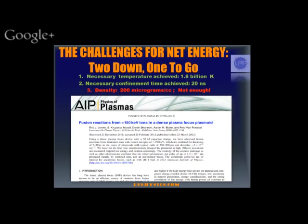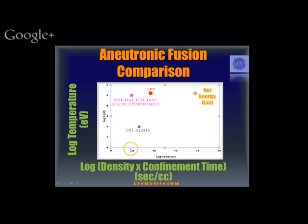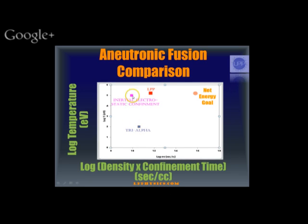Our density is about 8×10^19 per cc right now. Comparing with others working on a-neutronic fusion: on a rough graph of log temperature versus log N-tau (density confinement time), this is where we are and this is where we need to be. At least until this afternoon, I think Tri-Alpha is here and IEC is roughly here translated to N-tau. We are, at this snapshot, orders of magnitude closer to the goal. That doesn't mean we're necessarily going to reach the goal first, but we do have the shortest path.